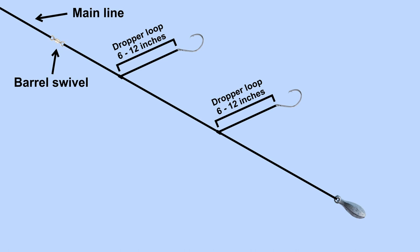I like to make my leaders about 10 to 20 pounds weaker than my main line. On the leader, I'll have one to two dropper loops, about 6 to 12 inches long. These will be the things holding the hooks.